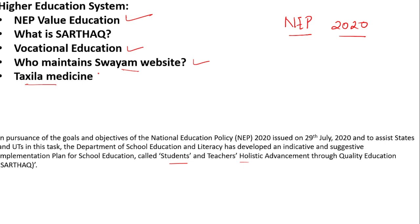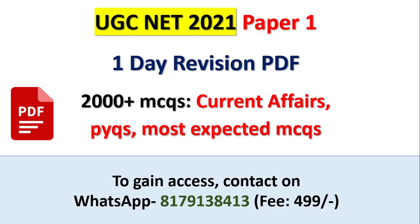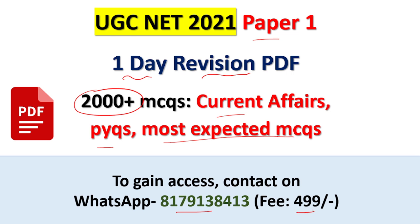Today, the high focus was on people and environment and higher education. For students appearing in upcoming days, Global Online University has brought UGC NET Paper 1 preparation — a one-day revision PDF with 2000+ MCQs including current affairs, PYQs, and most expected MCQs. You can contact on the given number; the fee is minimal at just ₹499, and with this single PDF you can complete your whole Paper 1 revision, because revision is a must for any examination. This is the analysis for the evening shift. I will come up again with analysis of upcoming examinations up to 5th December, so that both current and future exam aspirants can keep these topics in mind while preparing. All the best!